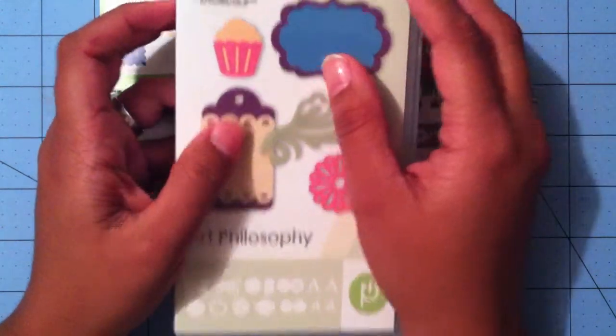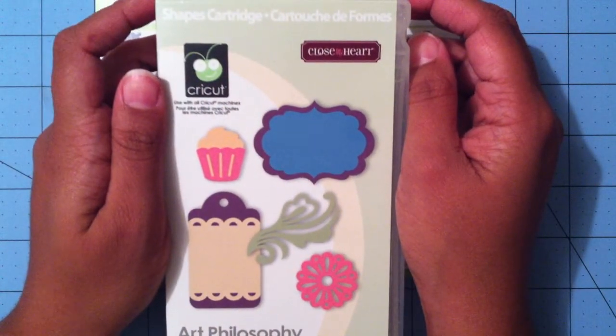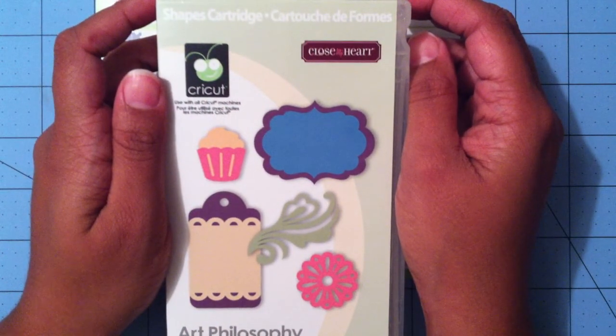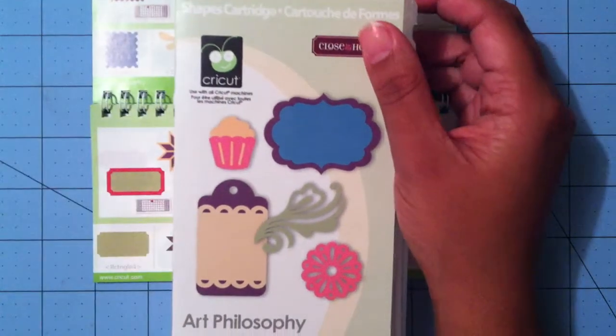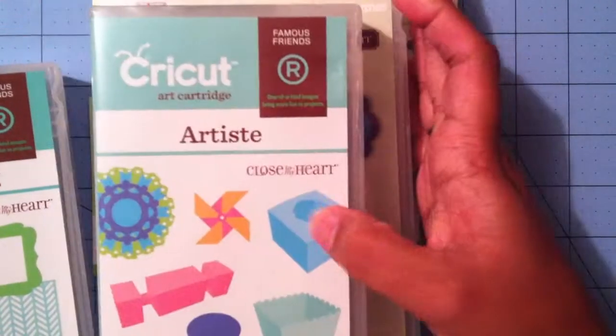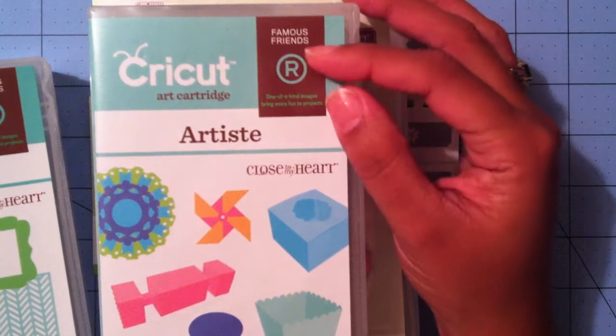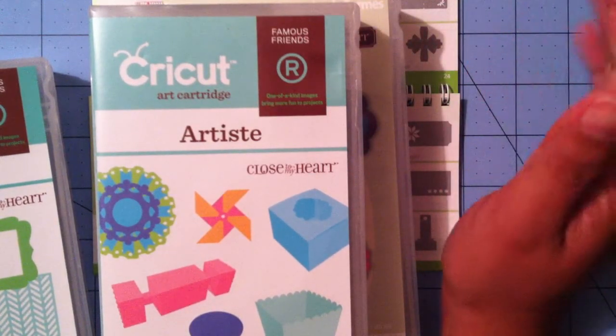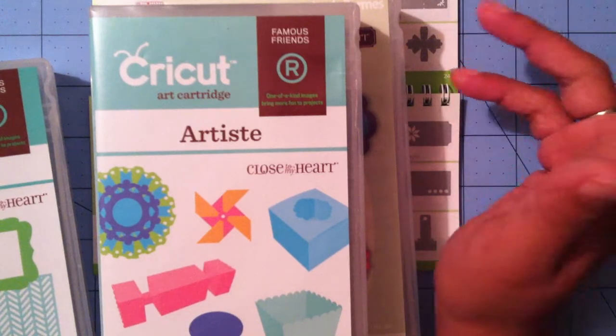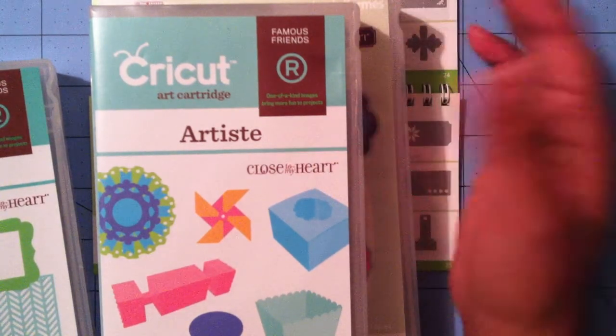Close to My Heart has exclusive Cricut cartridges. They have three and one that's about to come out. They have this Art Philosophy. They have this Artiste, which out of my 200 cartridges, this is my favorite. If anybody needs a cartridge and are just starting out, and even if you're not starting out, I have 200 of them. This is my go-to cartridge. It doesn't leave my table.